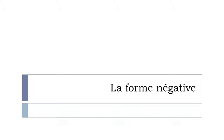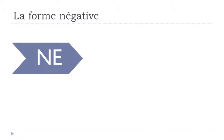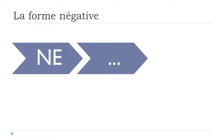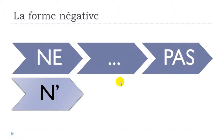The negative form in French is composed of two elements: the first one is 'ne', then you get your verb, and right after your verb you will have to put 'pas'. So first 'ne', then the verb, and after that 'pas'. We write it P-A-S, but as usual the final S is not pronounced, so it's 'pa'.